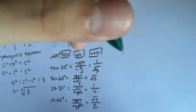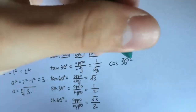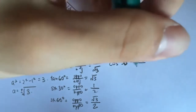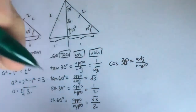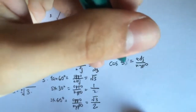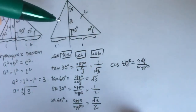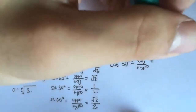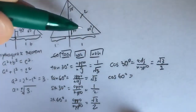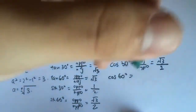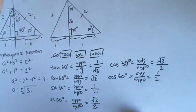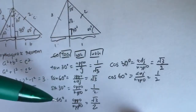For cosine 30, it's adjacent over hypotenuse. The adjacent is square root 3 and the hypotenuse is 2, so cosine 30 equals square root 3 over 2. For cosine 60, the adjacent is 1 and the hypotenuse is 2, so cosine 60 equals one half. As you can see, sine 30 equals cosine 60, and sine 60 equals cosine 30.